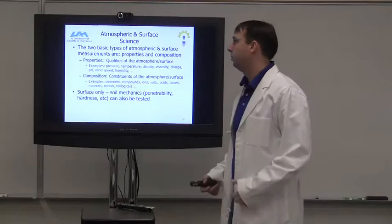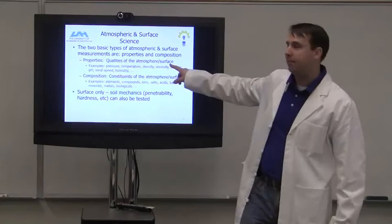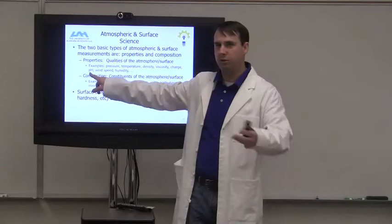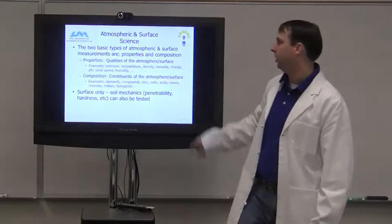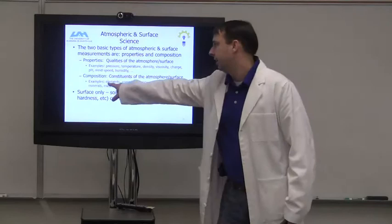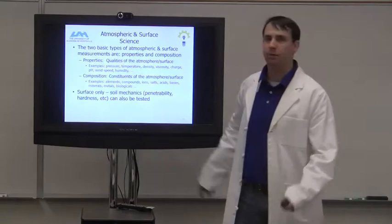There are two basic types of atmospheric and surface measurements: properties and composition. Properties are the qualities of the atmosphere or the surface — examples include pressure, temperature, density, viscosity, charge, pH (which is acidity), wind speed, and humidity. Composition refers to the constituents of the atmosphere or the surface — examples include elements, compounds, ions, salts, acids, bases, minerals, and biologicals.